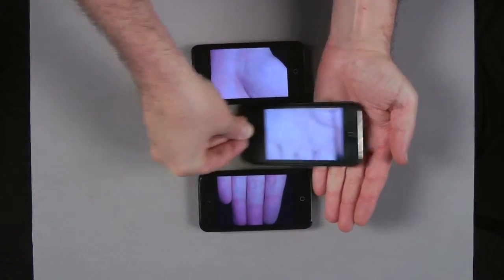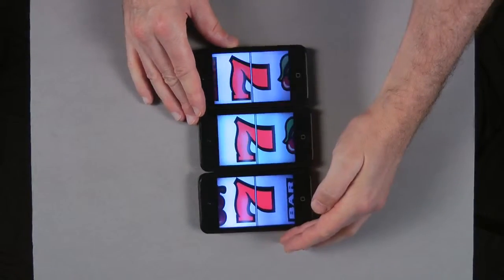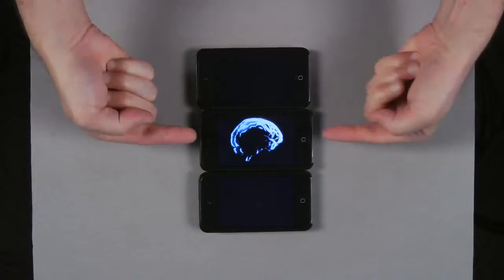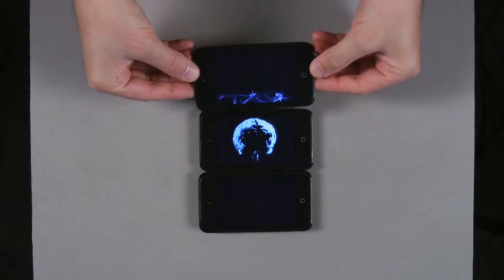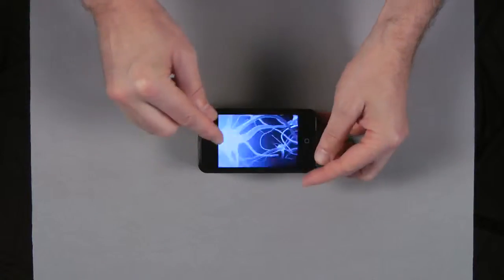Compulsive gamblers are experts in self-deception. They believe they can win. They forget the times they lose. The brain is very good at forgetting. Bad experiences are quickly forgotten. Bad experiences quickly disappear.